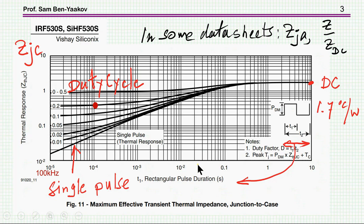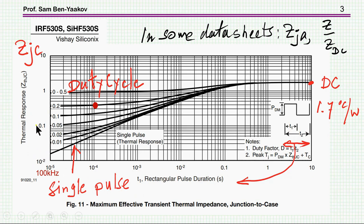Vendors give us a chart for the thermal impedance — thermal response. Here the x-axis is the length of the pulse, and the y-axis is the thermal impedance or resistance. In this particular case it's given in actual thermal resistance, but in many cases it's normalized to the DC value.